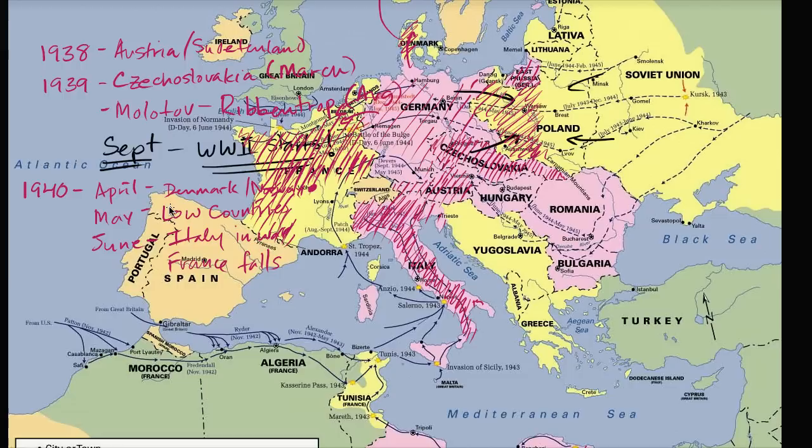And then in July, Germany began bombing Britain — the famous Battle of Britain, which was actually called that even before it began. Winston Churchill said we have to prepare for the upcoming Battle of Britain, and Germany starts bombing Great Britain.